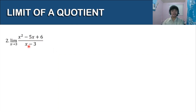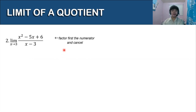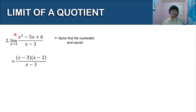For problem 2, the limit of x squared minus 5x plus 6 over x minus 3 as x approaches 3 — direct substitution gives 3 minus 3 equals 0 in the denominator, which is undefined. So we factor the numerator: x squared minus 5x plus 6 factors as (x minus 3)(x minus 2). We can cancel (x minus 3) in the numerator and denominator. The remaining expression is x minus 2. Substituting x = 3: 3 minus 2 equals 1. The limit is 1.